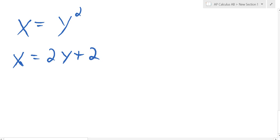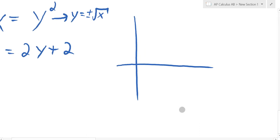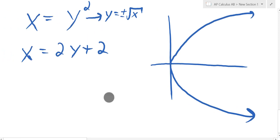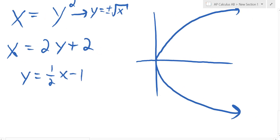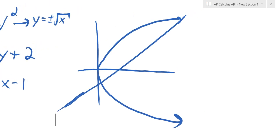If you wanted to graph these, you could solve for y. y squared is just a parabola opening sideways — if x equals y squared, then y equals plus or minus root x. That's the positive square root here and the negative square root here. And if x equals 2y plus 2, then y equals one-half x minus 1, which looks like this. Those two graphs definitely close an area — we want to find the area of that shape.